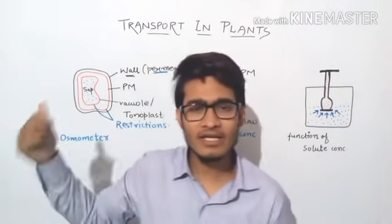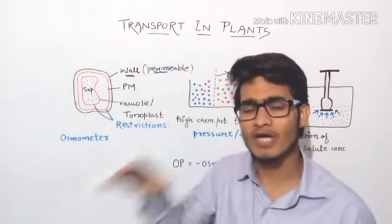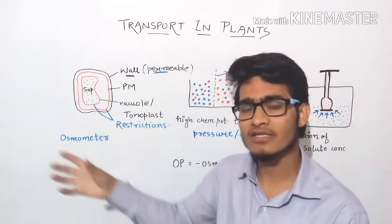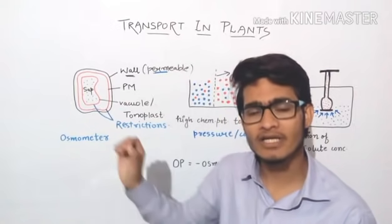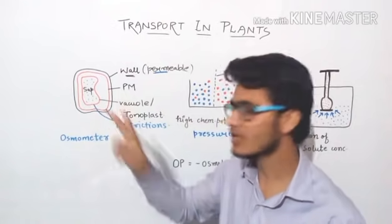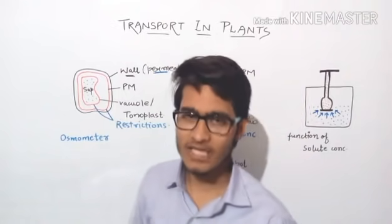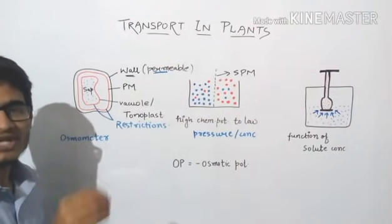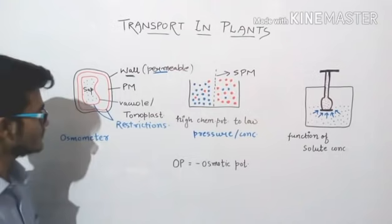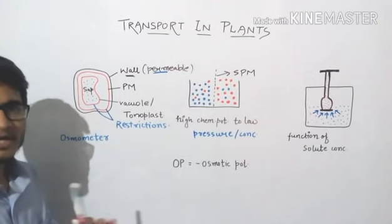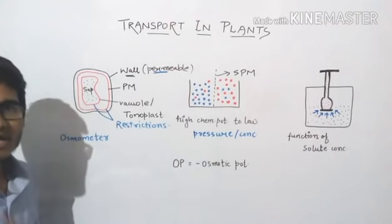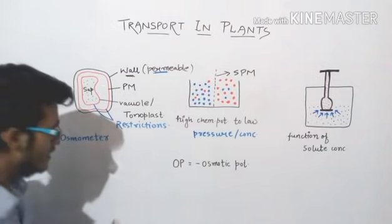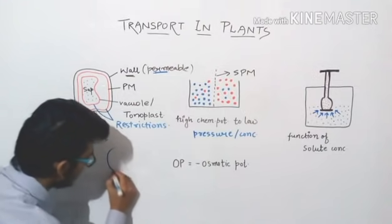Because the plasma membrane and tonoplast create restrictions, they determine the concentration of solute and solvent inside the cell — these are the only two membranes which are selective in nature. Now I hope that all of you have heard about the osmometer. You may have done an experiment in 11th or 12th class, even in 10th class, about the potato osmometer. I will brief you about that particular experiment.